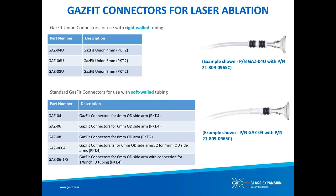Two tables are listed for Gas-Fit connectors. The first is the union-type Gas-Fit connector, used when connecting rigid wall tubing from your laser ablation system to one of the torch adapters — the Gas-Fit union provides a push-fit seal of the laser ablation tubing directly to the torch adapter (e.g., part number GAZ-04U with adapter 21-809-0965C and 4mm OD rigid wall tubing). The second table lists standard Gas-Fit connectors for soft wall tubing, where the tubing pushes over a barb to seal to the Gas-Fit connector, which then slides over the arm of the torch adapter (e.g., part number GAZ-04 with adapter 21-809-0965C).